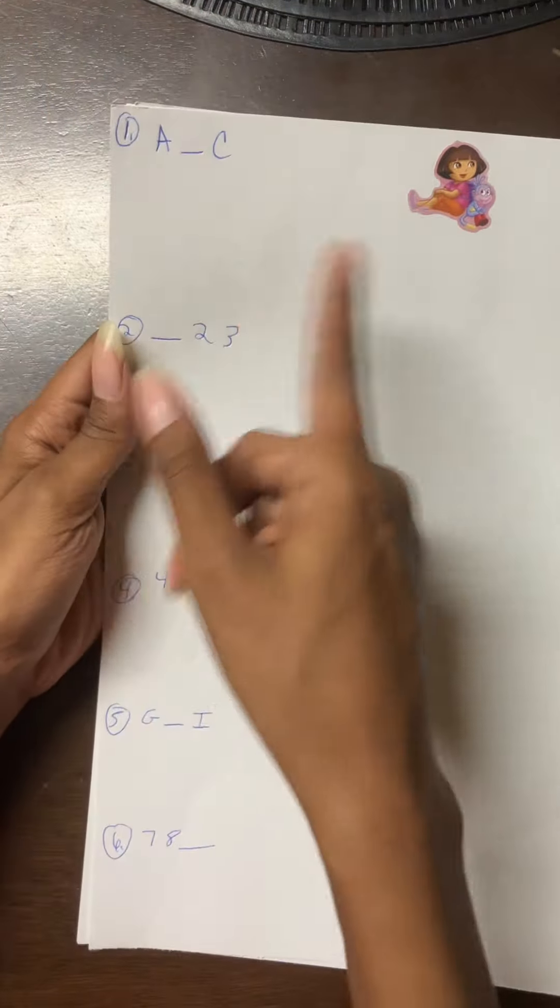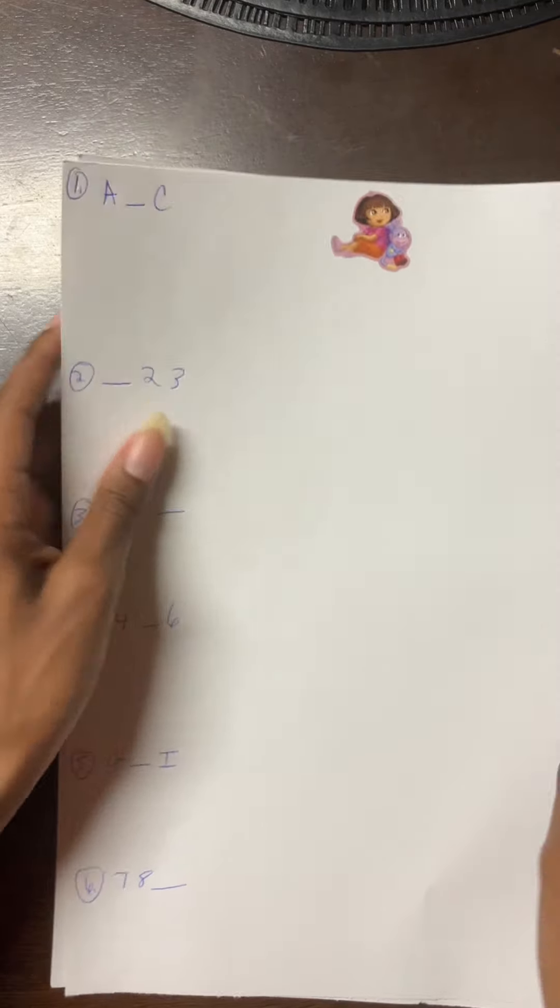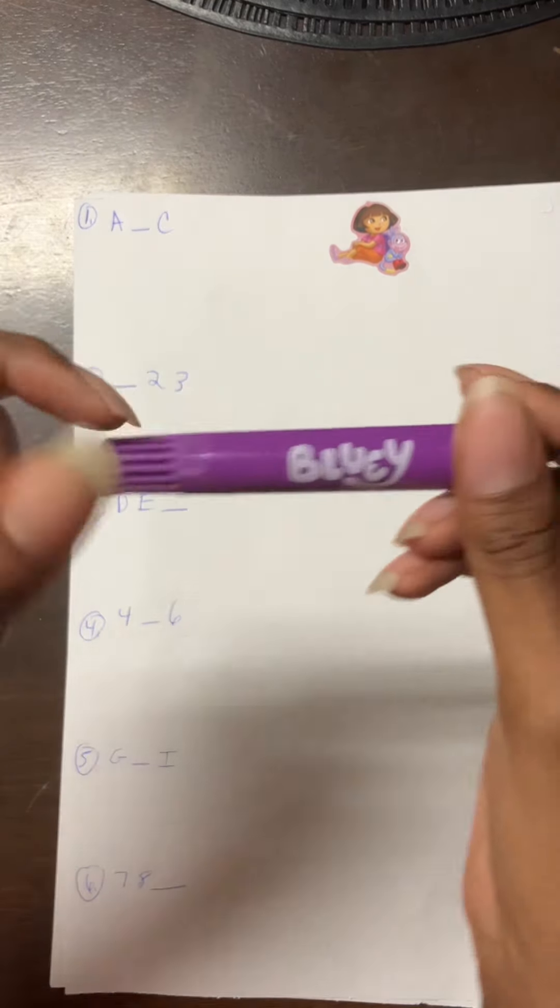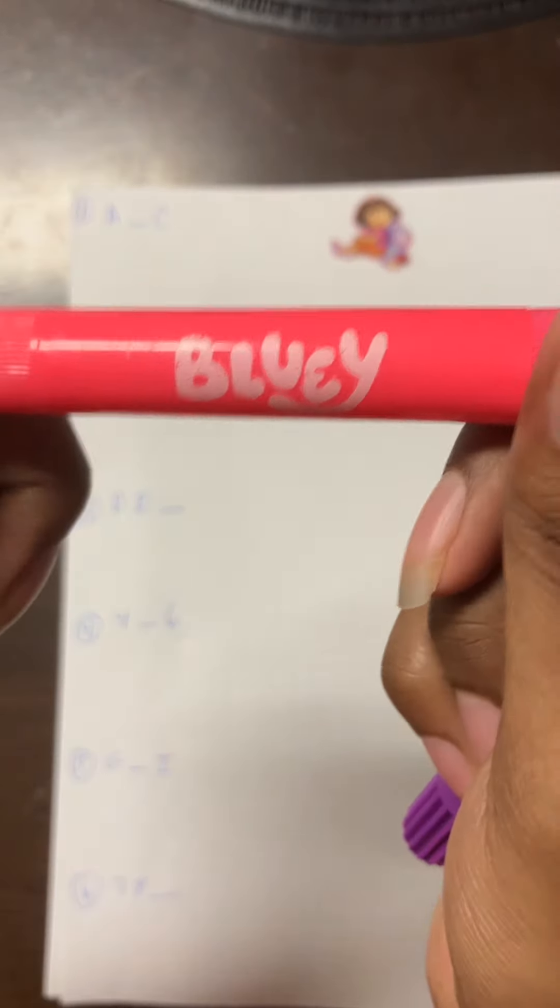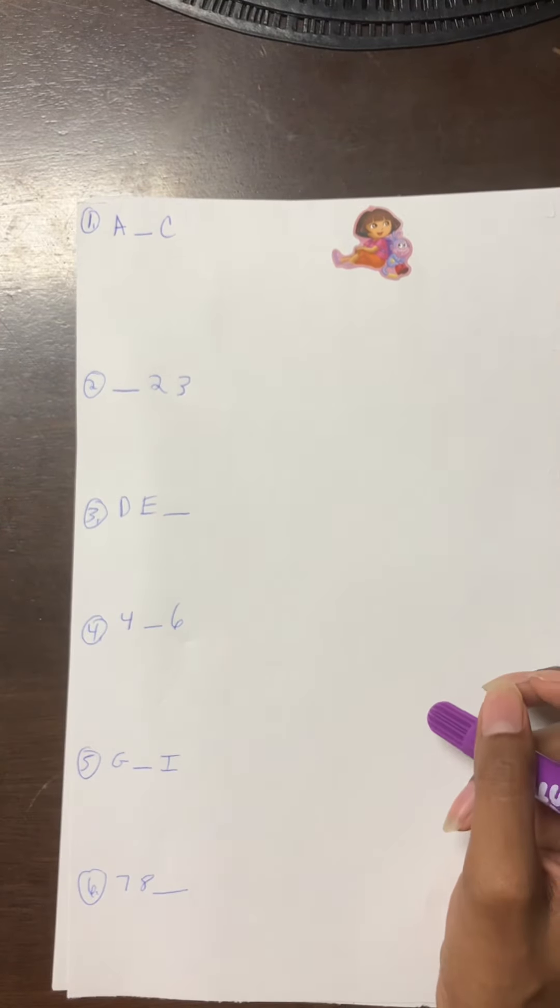We're gonna be filling in the blank with the missing letter and the missing number, and we're gonna be using the Bluey markers, the purple one and the pink one, to fill it in.